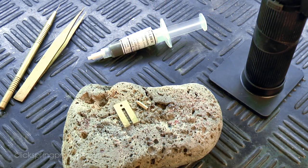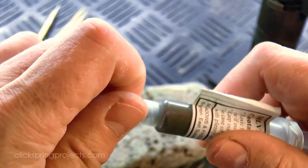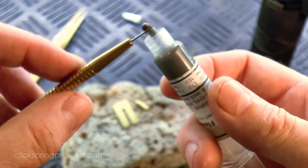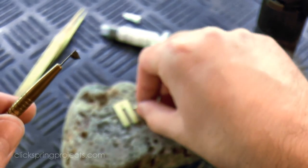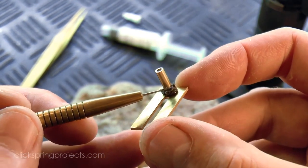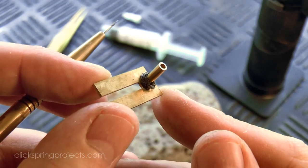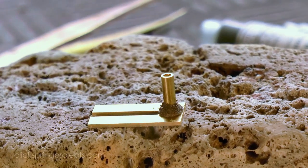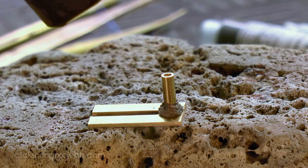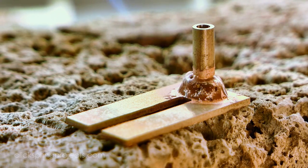Now soft solder would probably be quite adequate for this join, but given the nature of the intersection, I don't want there to be any doubts around its strength. So I'm going to use some of this combination flux and silver solder paste to do the job. It's a very convenient way to accurately position flux and hard solder around a small join like this one.